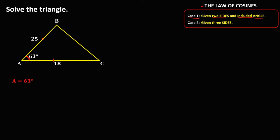In the given triangle, angle A is 63 degrees. Angle B is unknown and angle C is also unknown. Opposite to angle A is side A, also unknown. Opposite to angle B is side B, that's 18. And opposite to angle C is side C, that's 25.